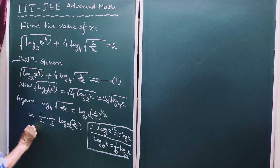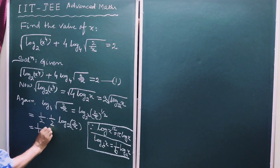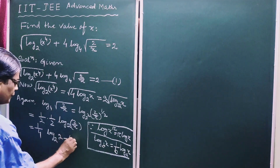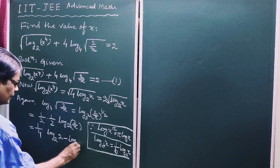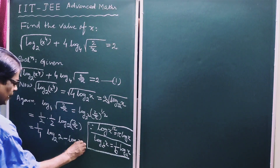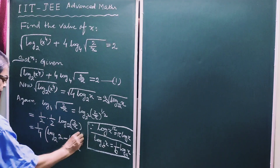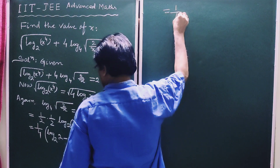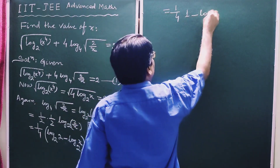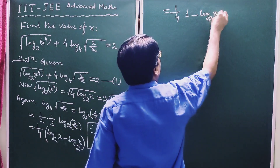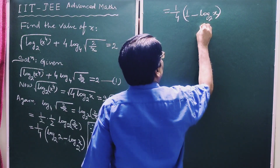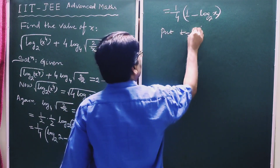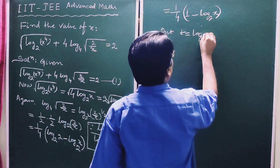So this is equal to one-quarter times log base 2 of 2 minus log base 2 of x. This simplifies to one-quarter times (1 minus log base 2 of x).